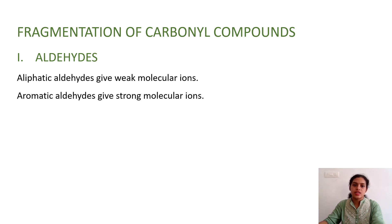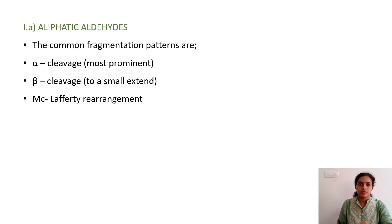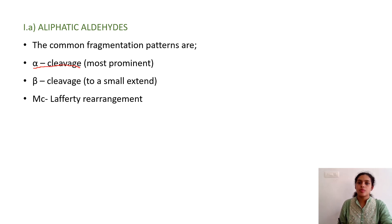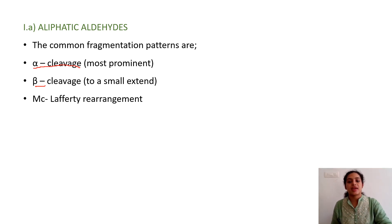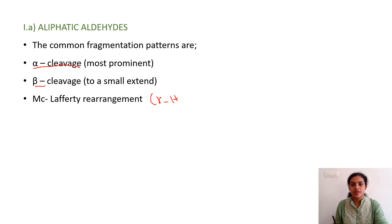Aliphatic aldehydes give a weak molecular ion whereas aromatic aldehydes give strong molecular ions normally. Regarding the fragmentation of aliphatic aldehydes, the common fragmentation patterns are: alpha cleavage, which is the most prominent one; then beta cleavage, which takes place only to a very small extent; and the third one is McLafferty rearrangement. For McLafferty rearrangement to happen, there should be a gamma hydrogen present.